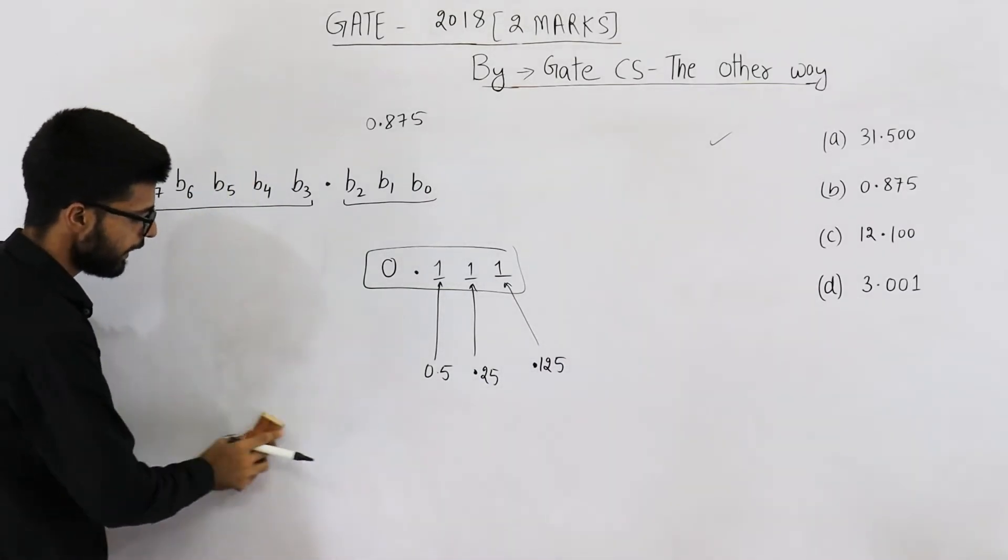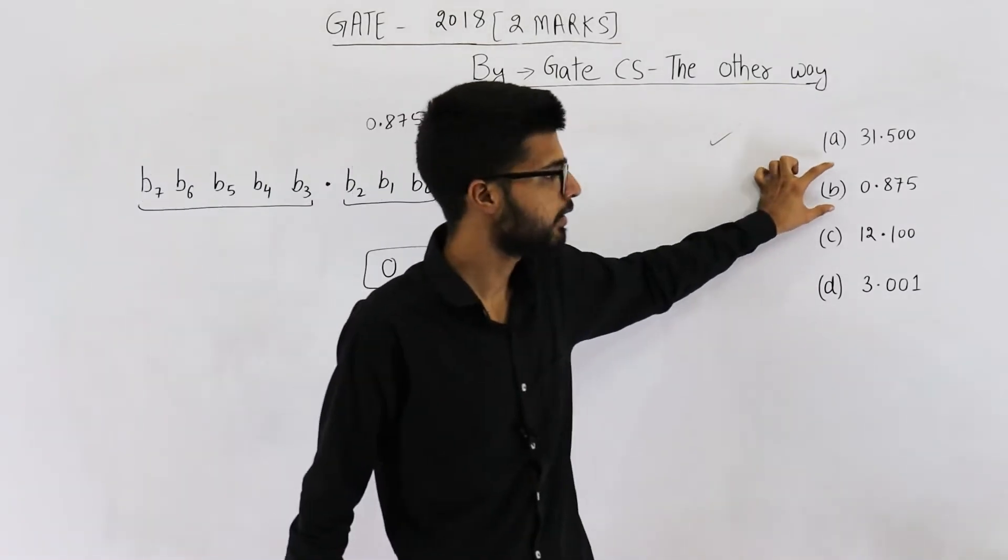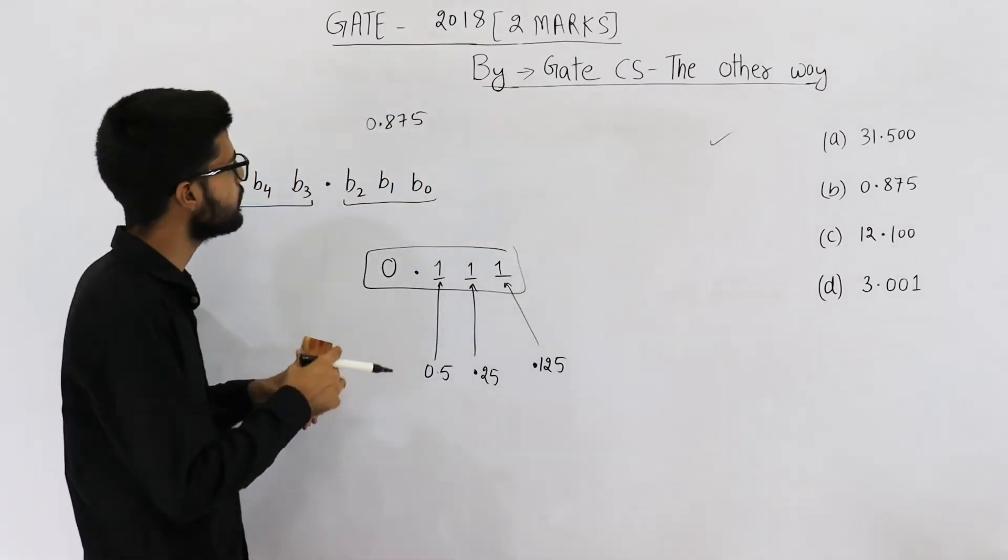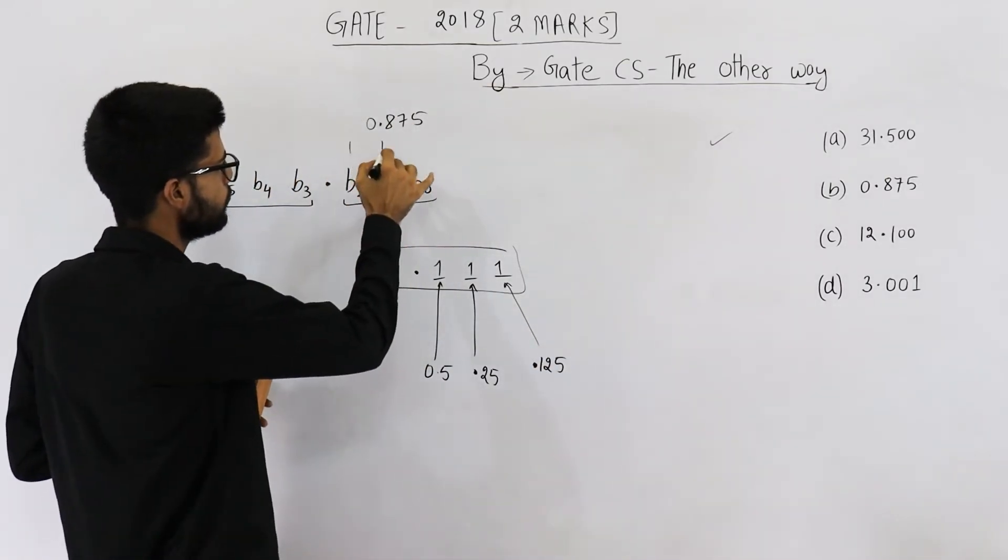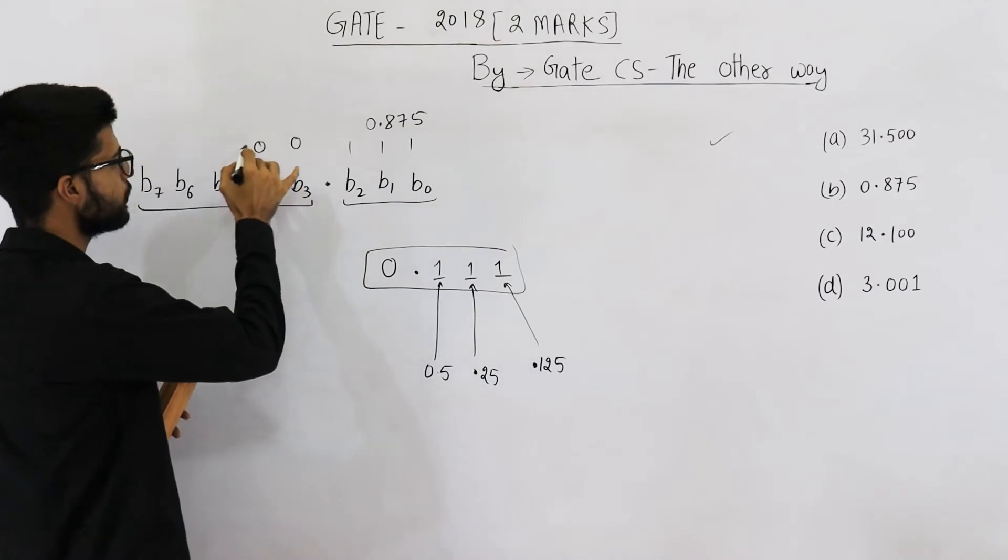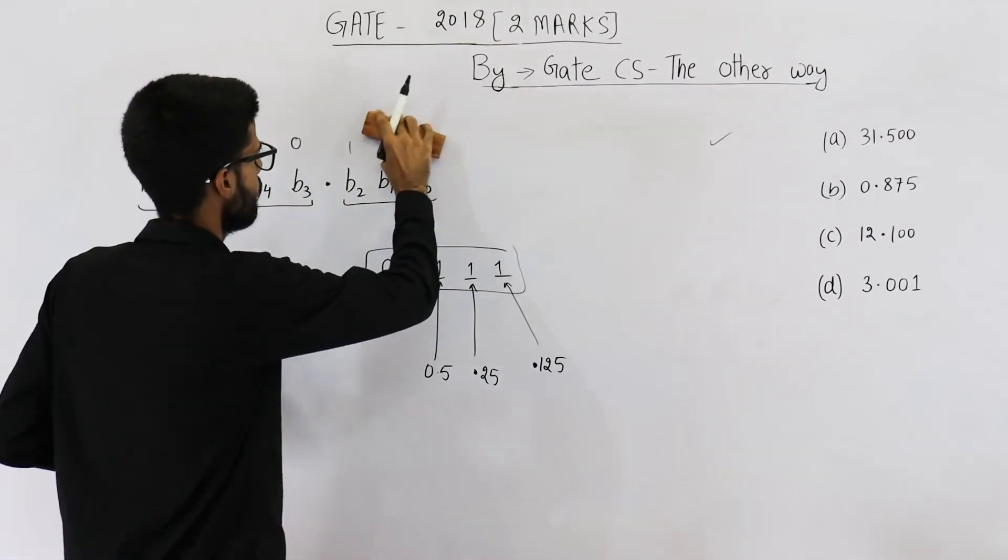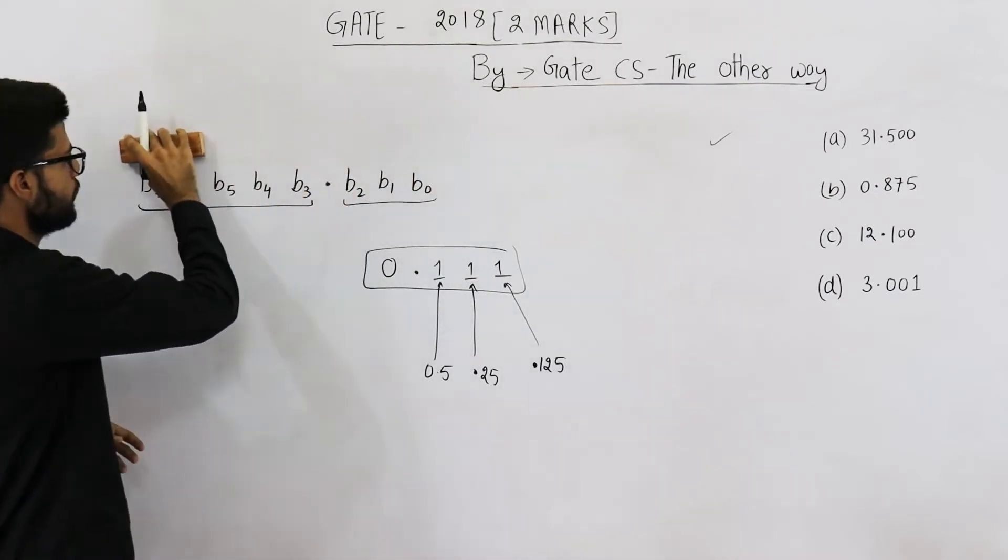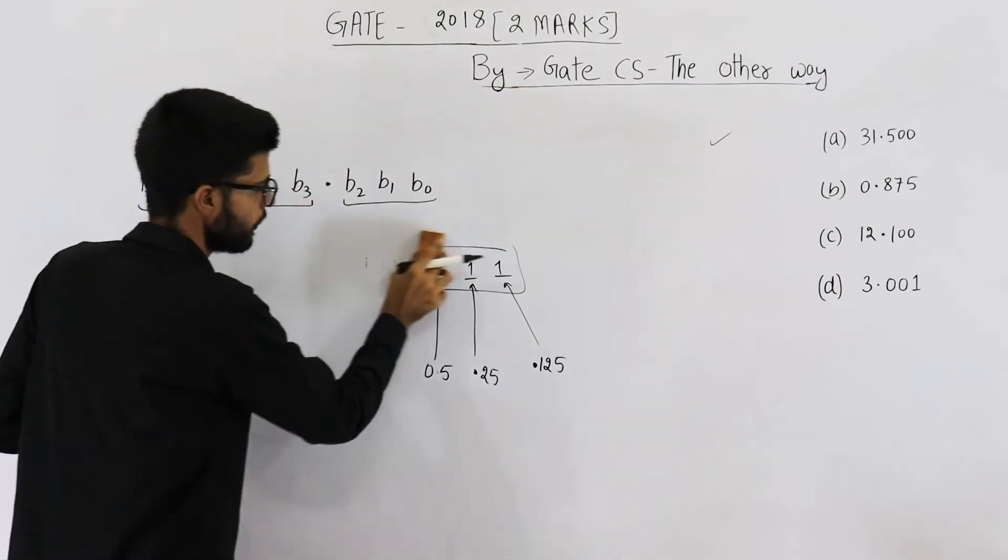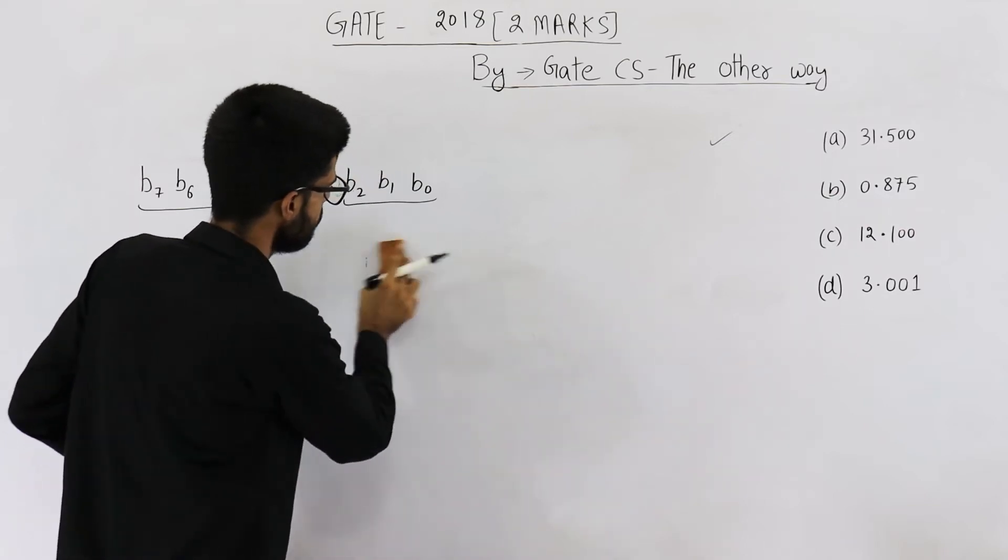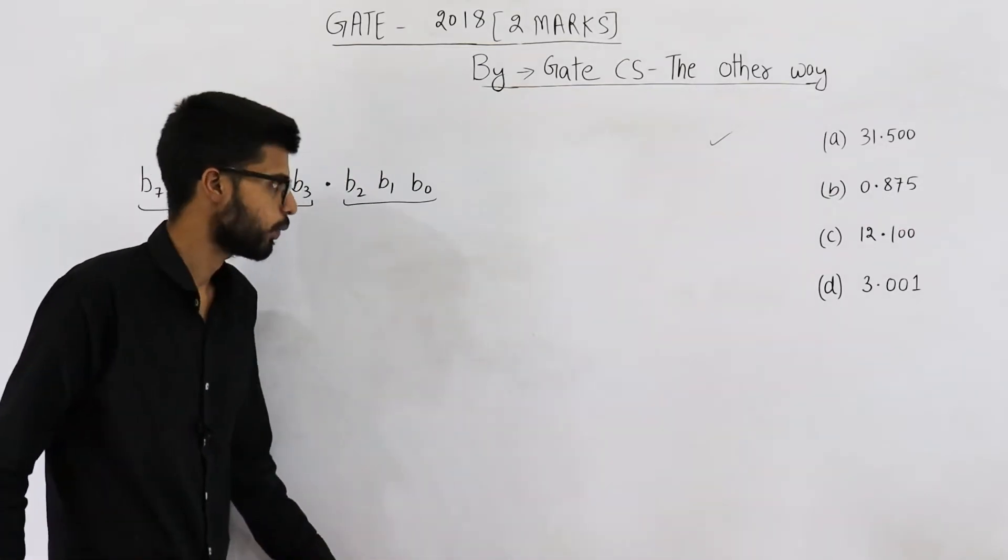So can we represent it in this representation? Of course, because these three bits will be 1 and all of these bits will be 0. This will be 0.875. Now let us see option C. In option C, the number is 12.1.